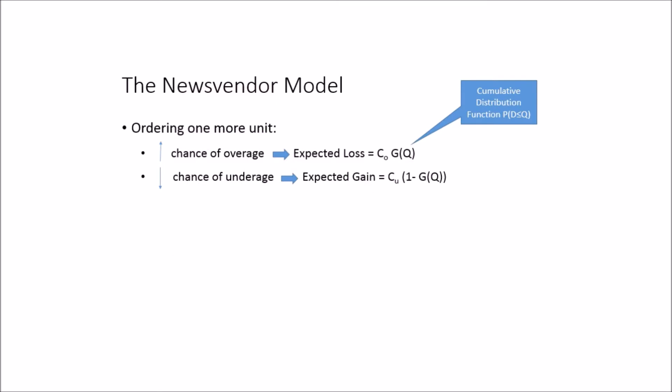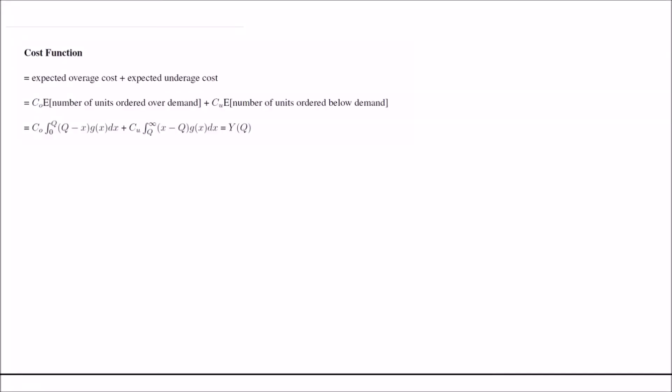In summary, ordering one more unit increases the chance of overage, resulting in an expected loss of CO (the cost of overage) times G(Q), where G(Q) is the cumulative distribution function — the probability that demand is less than or equal to Q. On the other hand, ordering one more unit decreases the chance of underage, resulting in an expected gain of CU (underage cost) times 1 minus G(Q).